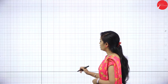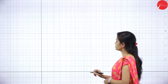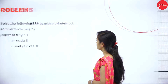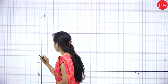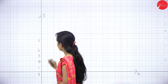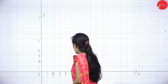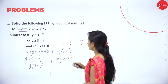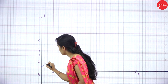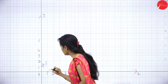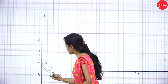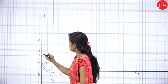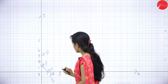Now let's see the graph — X axis and Y axis. The maximum value is 3, so I will mark 1, 2, 3, 5. The first points are (0, 1) and (1, 0) — this is my first constraint. And the second constraint uses points (0, 3) and (3, 0). Connect these two points now.